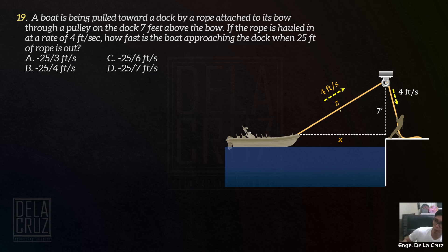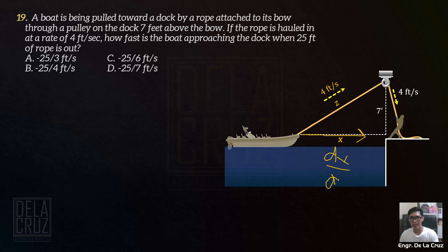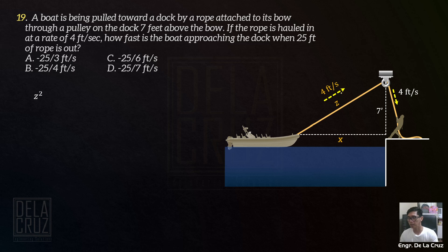This is a time rates problem — relative rates. Yung hinahanap natin: how fast is the boat approaching the dock? So yung movement ng boat towards the dock — that is the dX over dT. Yung hinahanap natin is the dX over dT. To do that, create ka ng equation involving X. Wala kang ibang magagawa kundi gamitin yung right triangle yan. Sa right triangle, by Pythagorean theorem: Z squared equal to X squared plus 7 squared.